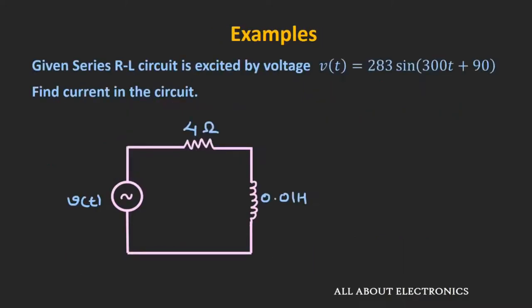Let us see some examples on this phasor representation. In this example, we have a series RL circuit excited by voltage V, and we are asked to find the current flowing through the circuit. We are given that V is 283 sin(300t + 90°). We know that the current I can be given by V over Z, where Z is the impedance of this RL circuit. We can represent this voltage in phasor form as 283 at angle 90 degrees.